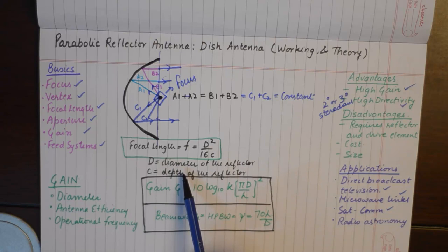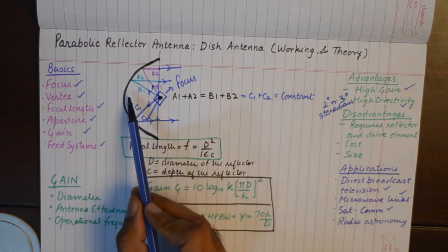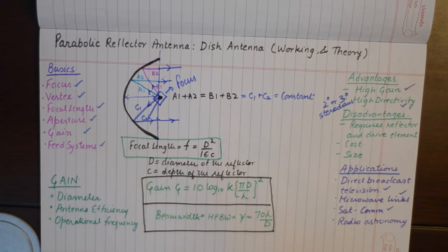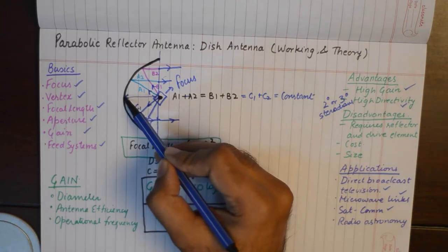Where d is the diameter of the reflector and c is the depth of the reflector. Depth is basically how diverged this parabolic antenna is.